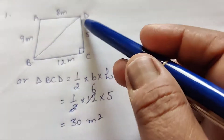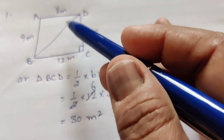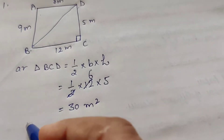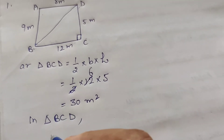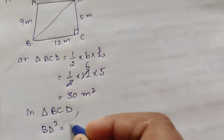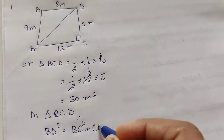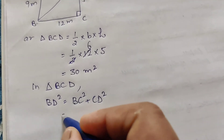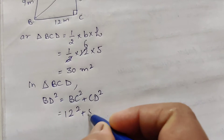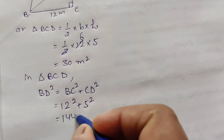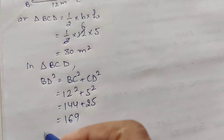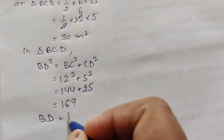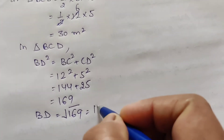For the area of triangle ABD, we first find side BD using Heron's Formula. In triangle BCD, BD square equals BC square plus CD square. BC is 12 and CD is 5, so 144 plus 25 equals 169. Therefore, BD equals the square root of 169, which is 13 meter.